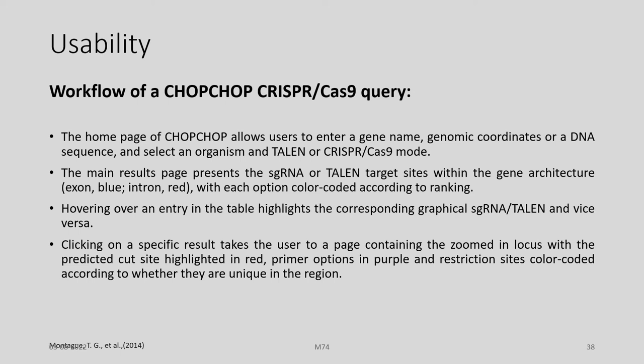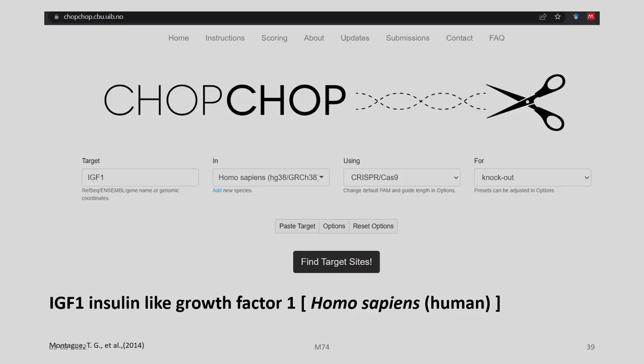Hovering over an entry in the table highlights the corresponding graphical single guide RNA or TALEN and vice versa. Clicking on a specific result takes the user to a page containing the zoomed-in locus with the predicted cut site highlighted in red, primer options in purple, and restriction sites color coded according to whether they are unique in the region.